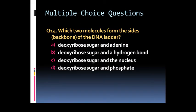Question 14: Which two molecules form the sides, that means backbone, of the DNA ladder? Options are option A: deoxyribose sugar and adenine. Option B: deoxyribose sugar and a hydrogen bond. Option C: deoxyribose sugar and the nucleus. Or option D: deoxyribose sugar and phosphate.